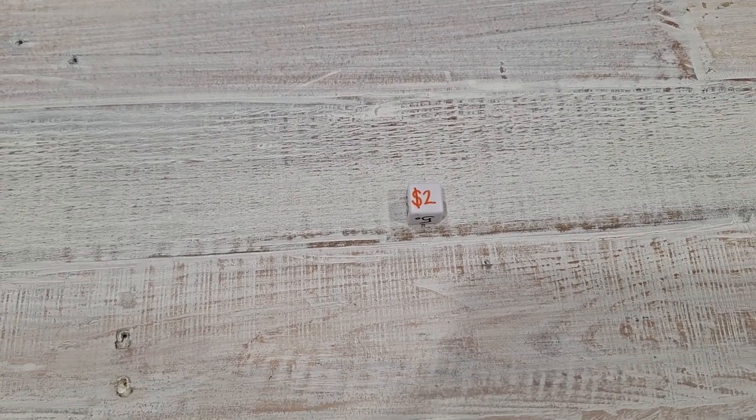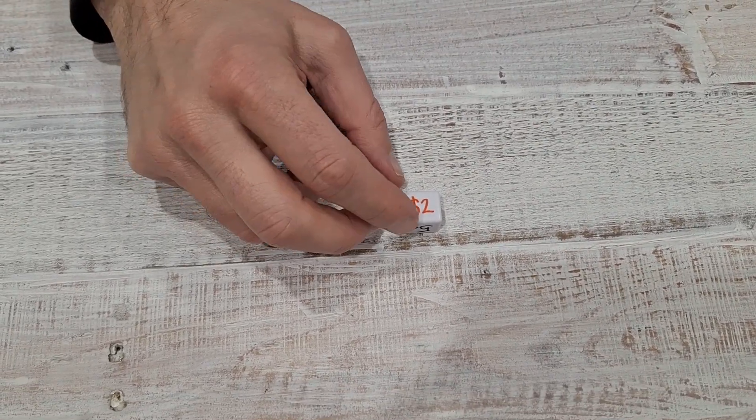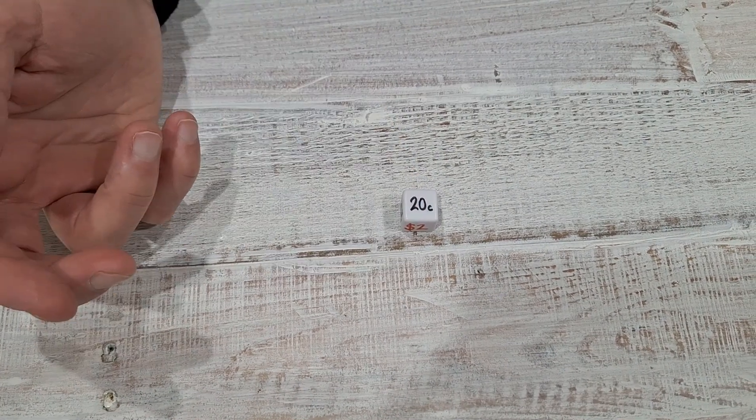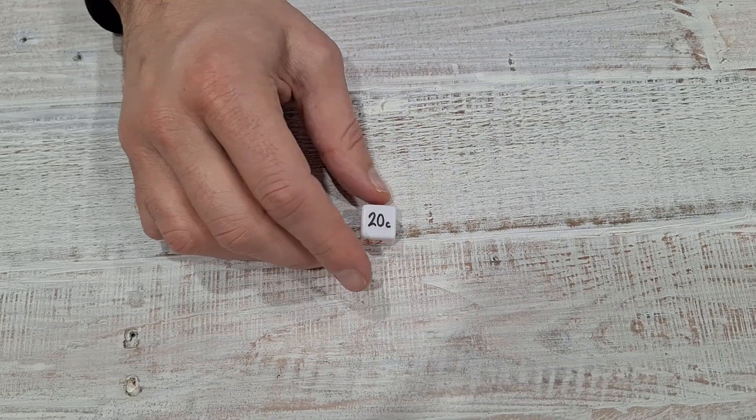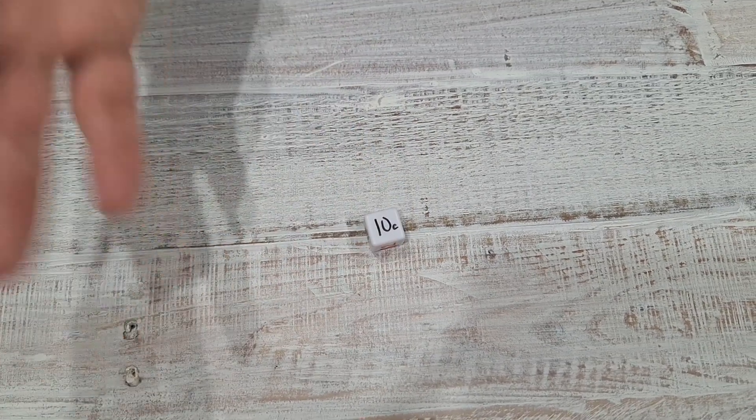Now, we're in Australia, so we have six different coins. So we've got a six-sided dice, and each face is labelled with one of the Australian coins. Yeah, so very easy to make a dice like that to use in whereabouts you're playing.